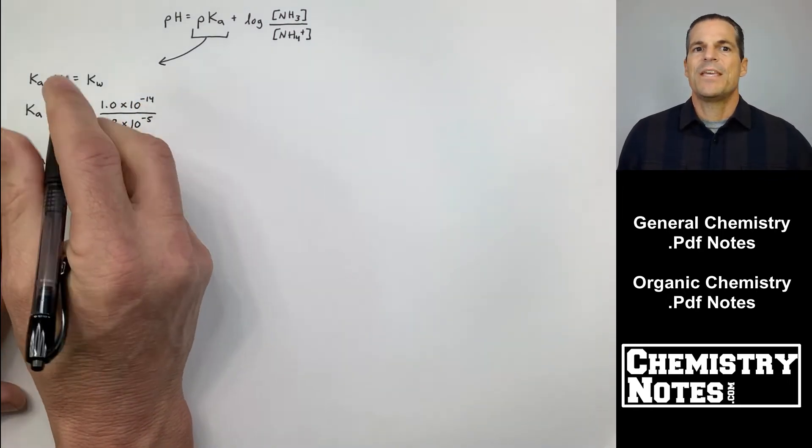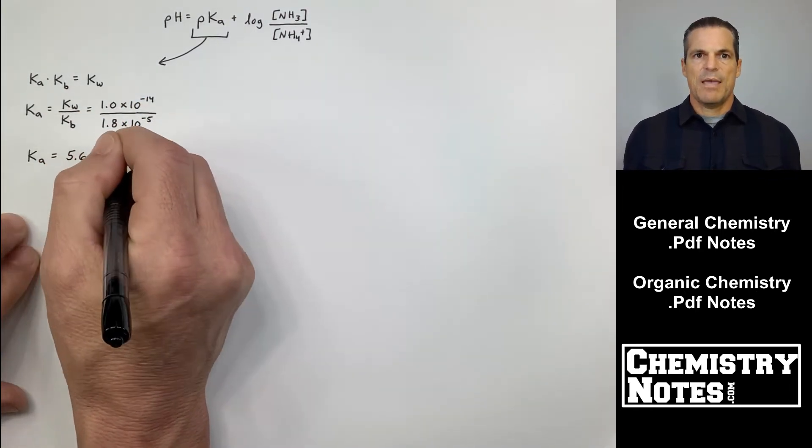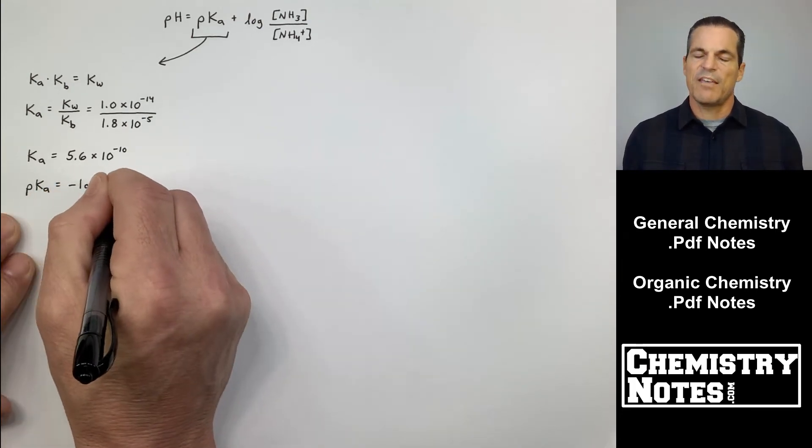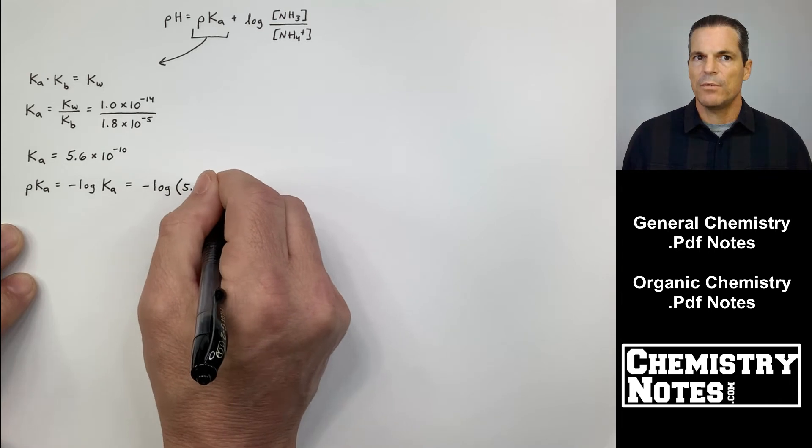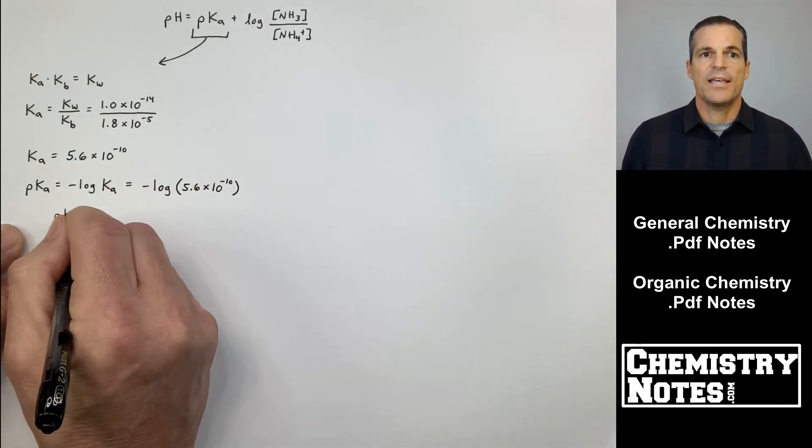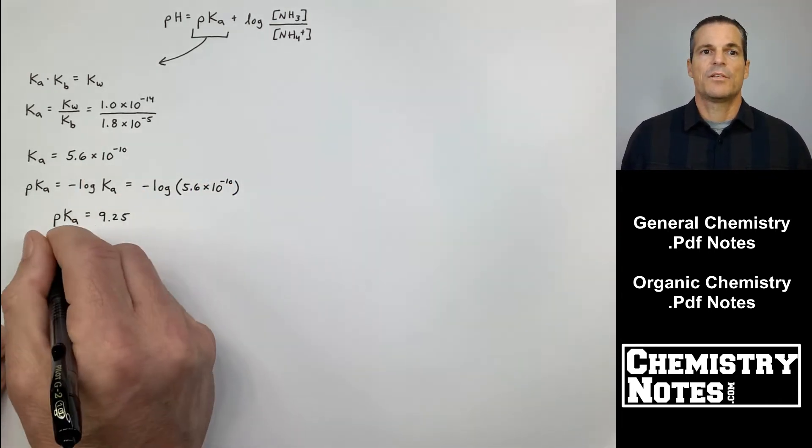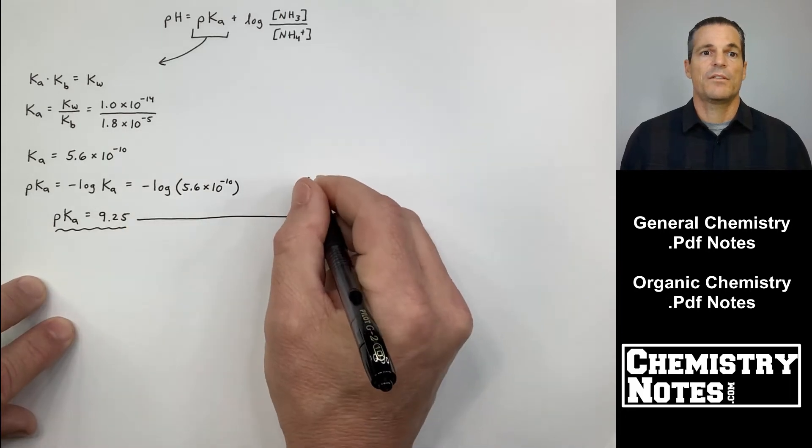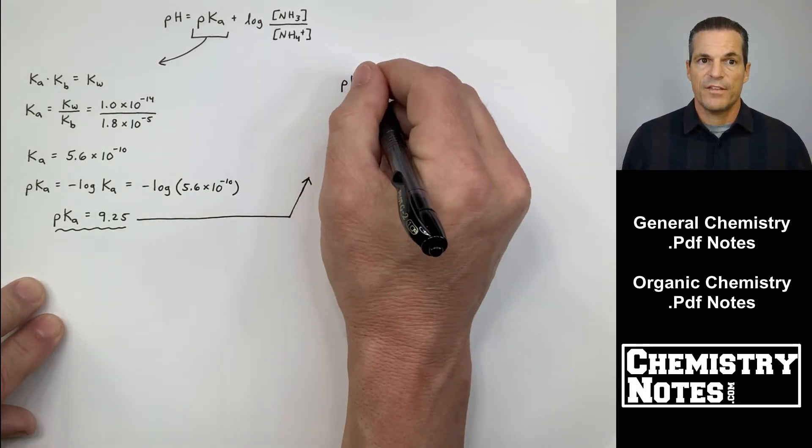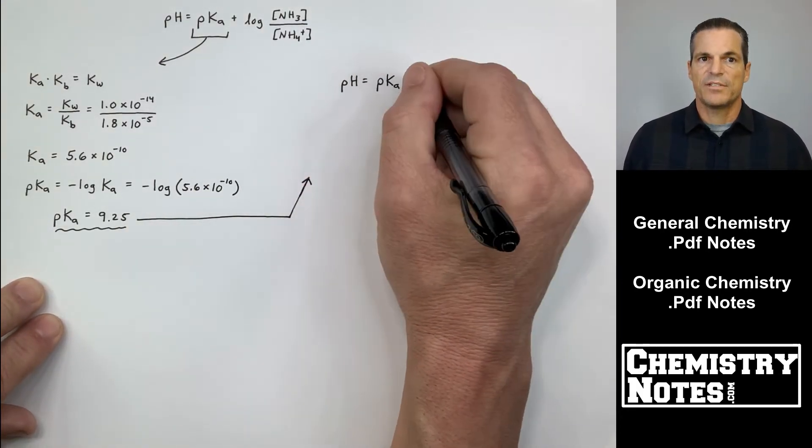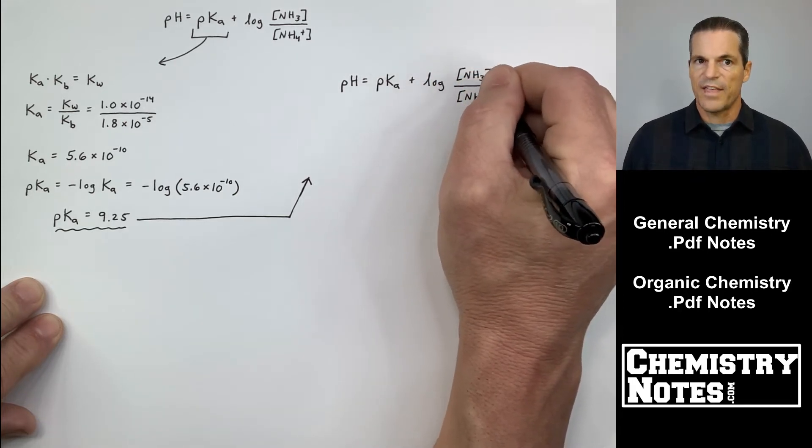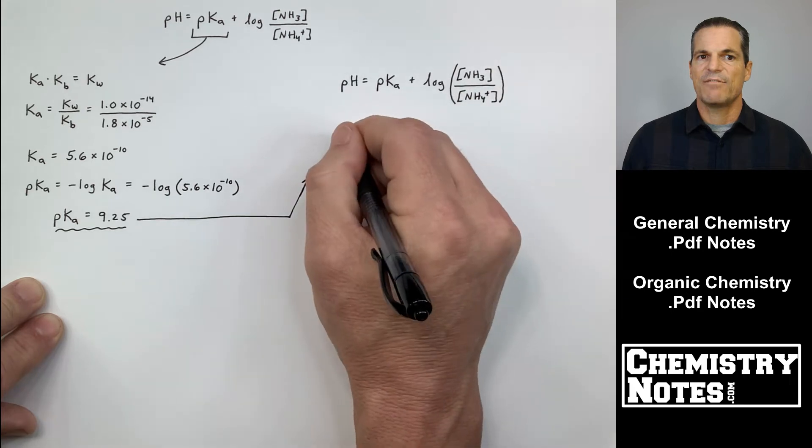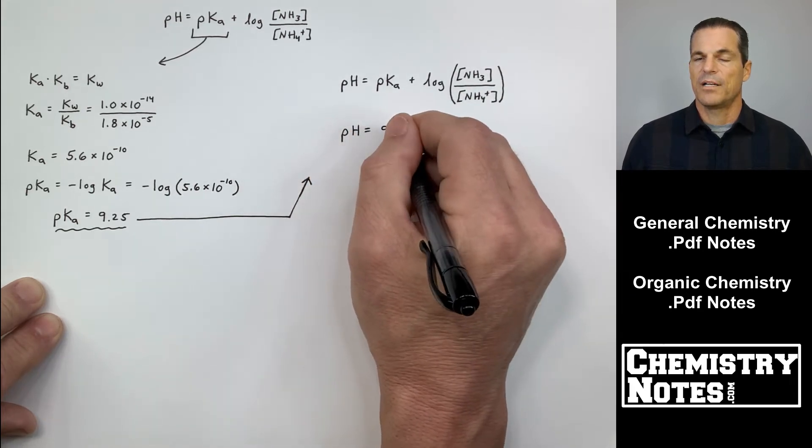pKa, I don't have the pKa because I don't have the Ka. This was a weak base problem. They gave me Kb. Well, Ka times Kb is Kw. So my Ka is my Kw over Kb. It's 1.0 times 10 to the minus 14th over 1.8 times 10 to the minus 5th. Ka is 5.6 times 10 to the minus 10. Do minus the log of that. And I get a pKa of 9.25.